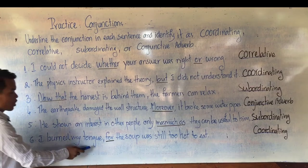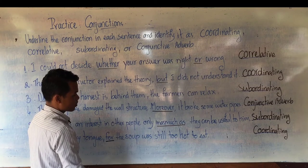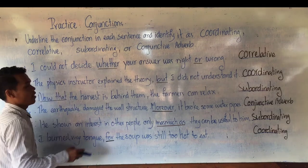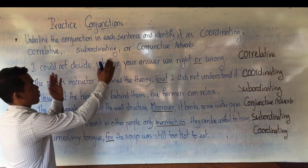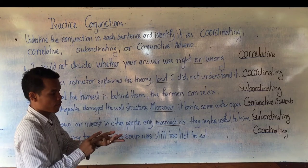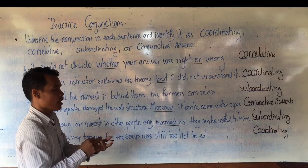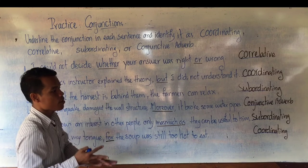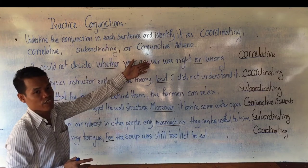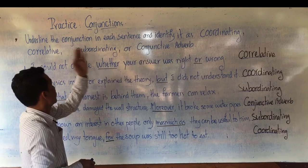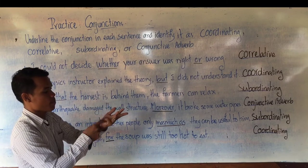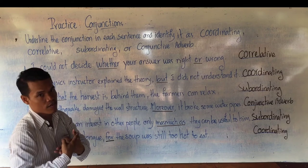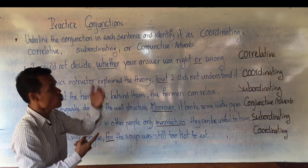The last example: 'for' from FANBOYS — coordinating conjunction. The easy way to remember coordinating conjunctions: FANBOYS — F for 'for,' A for 'and,' N for 'nor,' B for 'but,' O for 'or,' Y for 'yet,' S for 'so' — seven coordinating conjunctions. For correlative conjunctions we have: both/and, neither/nor, either/or, not only/but also, whether/or — five correlative conjunctions.